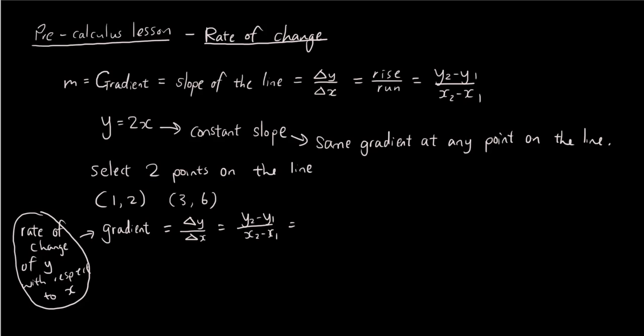which is y₂ minus y₁ over x₂ minus x₁. So, I'm going to let the second point here be x₂ and y₂. The first point be x₁ and y₁. So, it's 6 minus 2 over 3 minus 1. So, it's 4 over 2, which is 2.